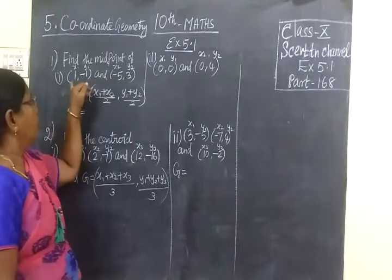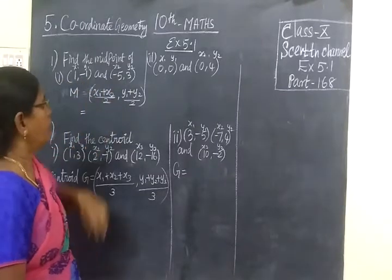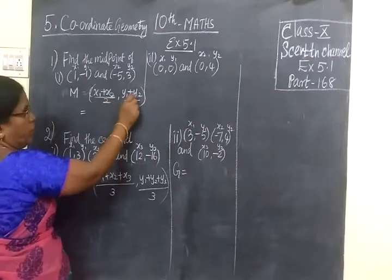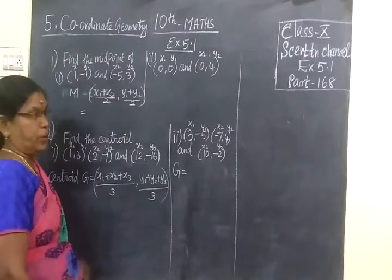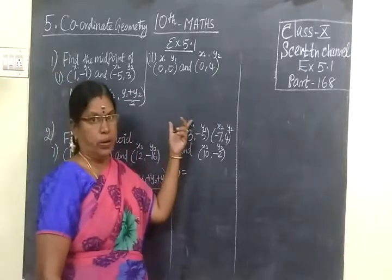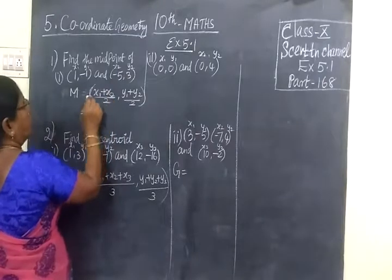Find the midpoint of the following coordinates: (1,-1) and (-5,3). Midpoint formula: x1 plus x2 by 2, y1 plus y2 by 2. All these formulas are given in the introduction part. So this is x1 y1 and this is x2 y2.